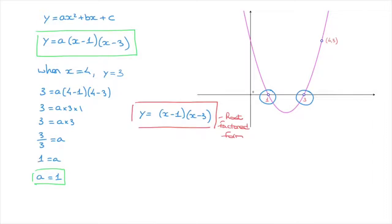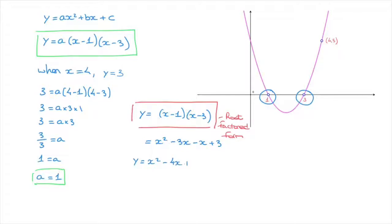In an exam or a test, we may be asked to find this parabola's equation in the form ax squared plus bx plus c. If that's the case, all we need to do is open up these parentheses. That gives us x squared minus three x minus x plus three. Simplifying this, we find this parabola's equation is y equals x squared minus 4x plus three.